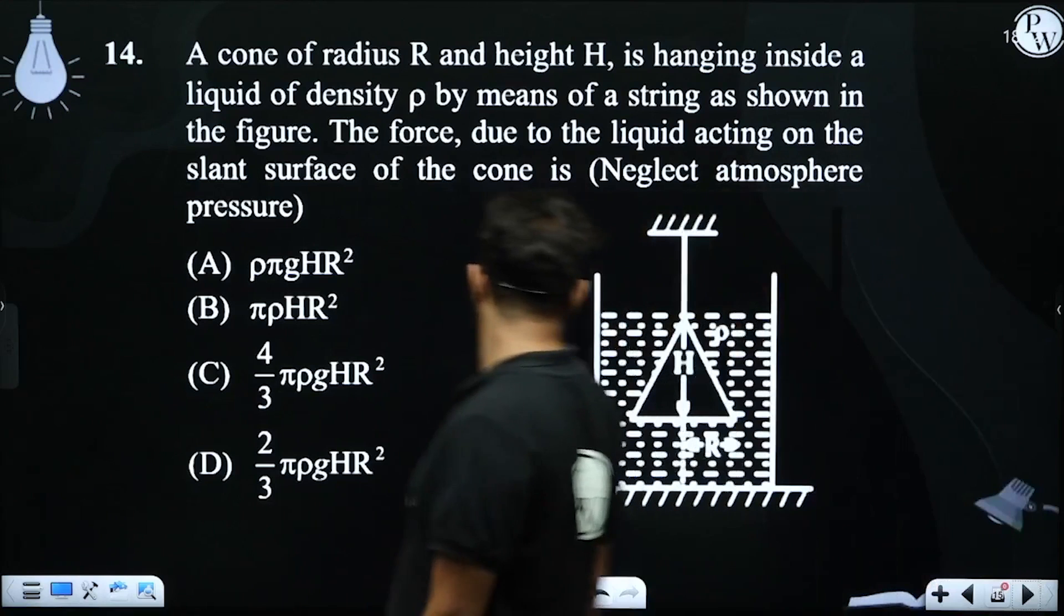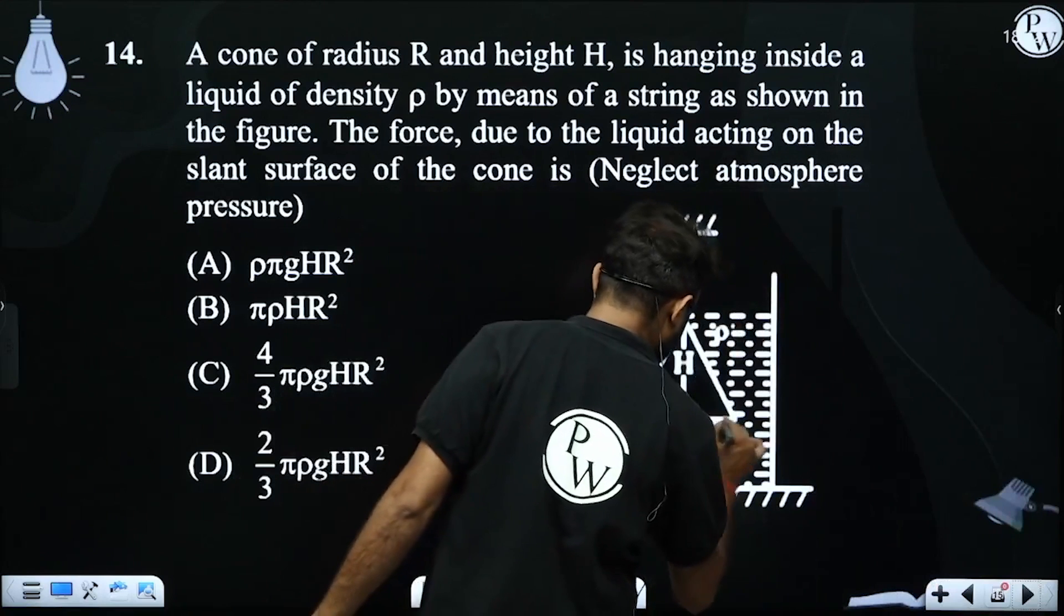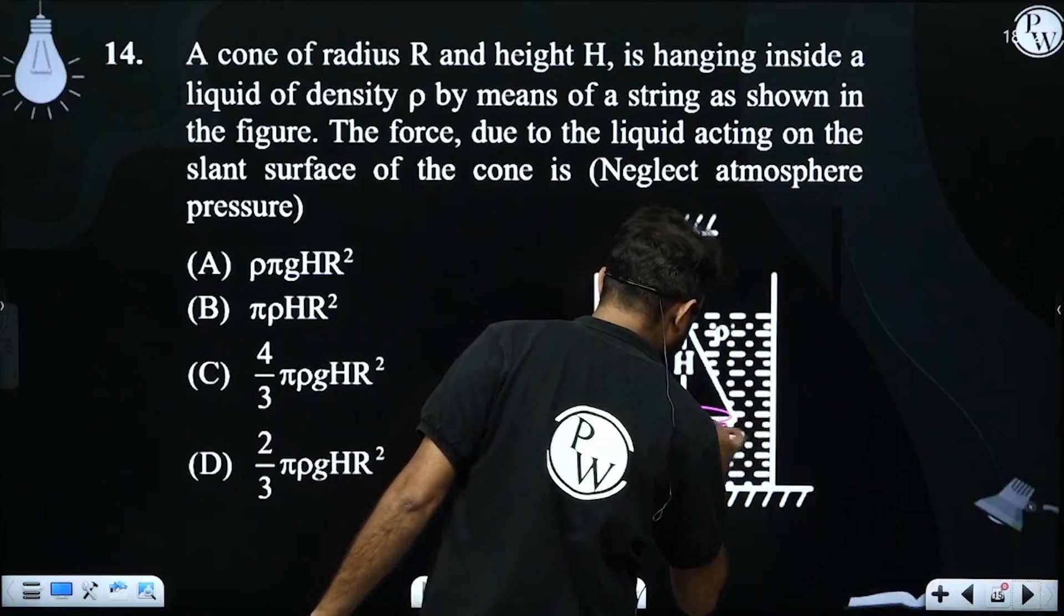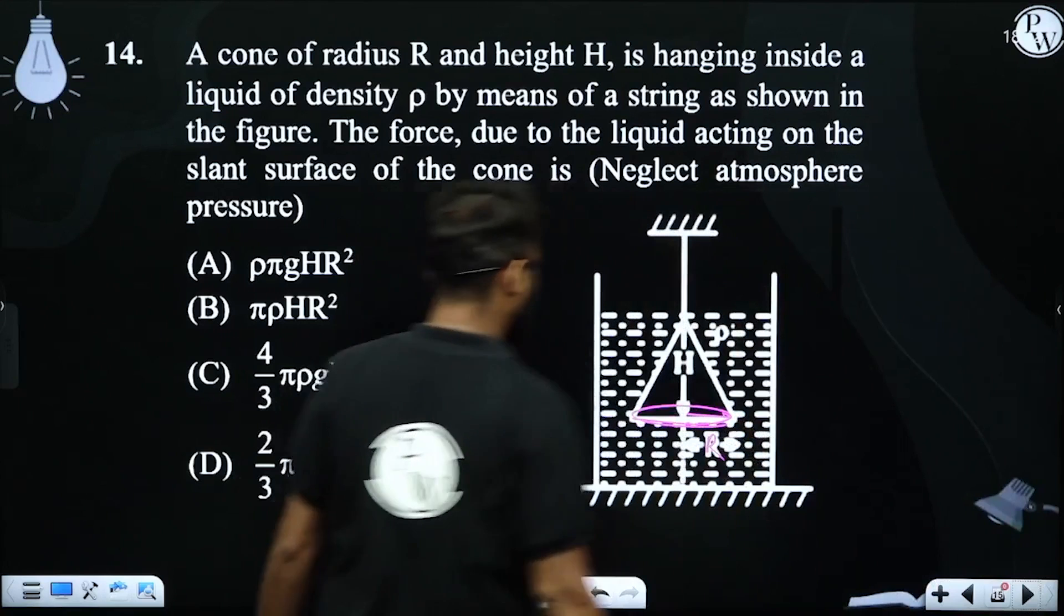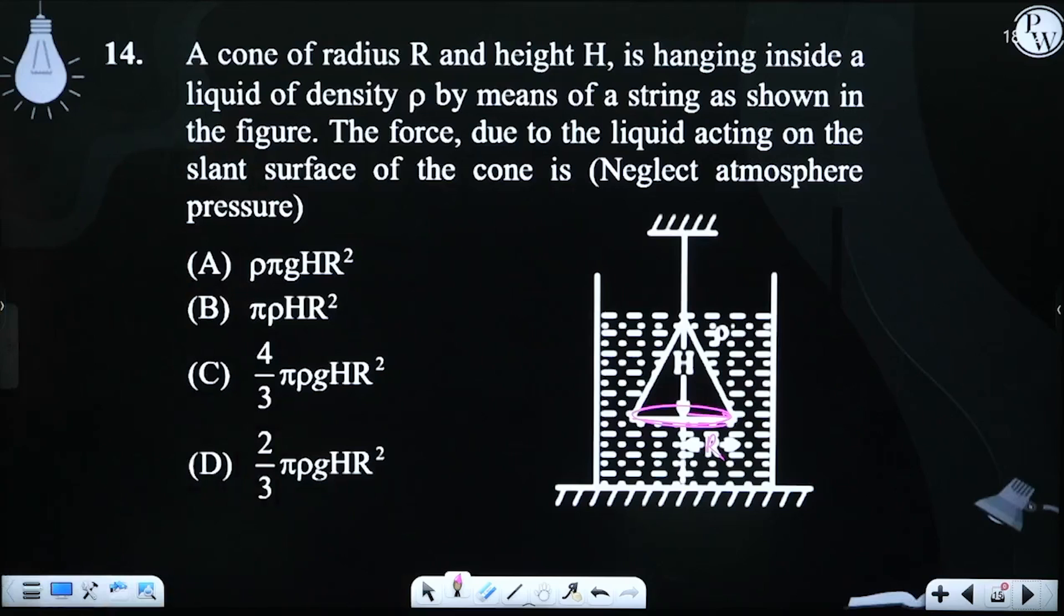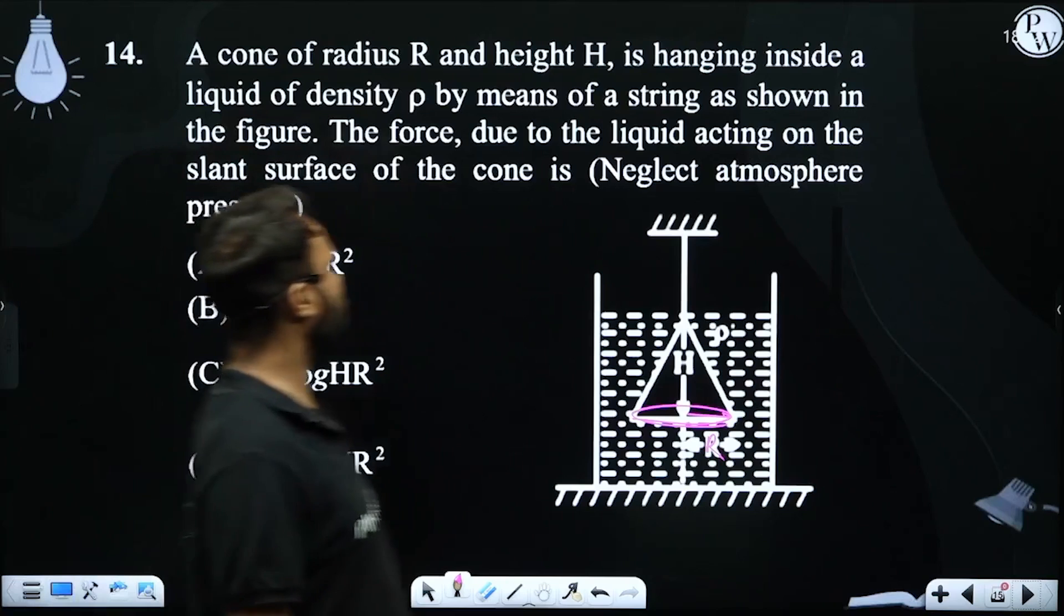A cone of radius R and height H is hanging inside a liquid of density ρ by means of a string as shown in the figure.